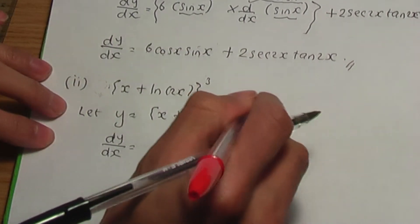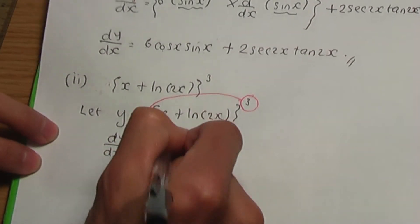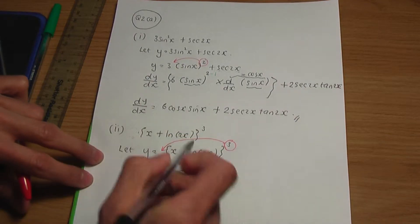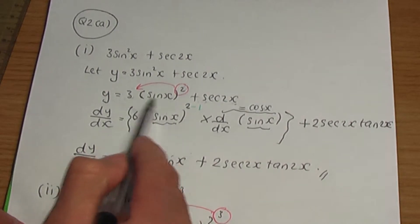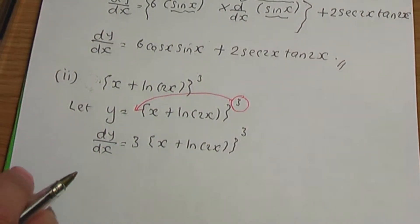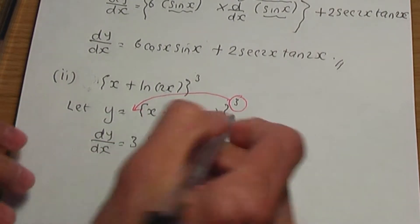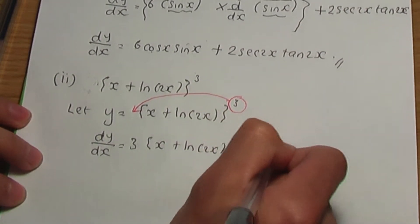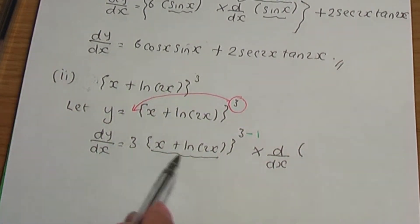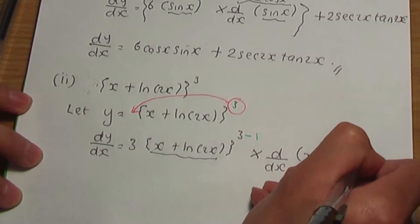We first multiply by the power. The power is 3, so you'll get 3 into x plus ln 2x to the power of... Remember the idea — just as when we differentiated the term in part 1, you need to subtract 1 from the power. So it's 3 minus 1. And then you need to multiply by the derivative of the term in the brackets, which is x plus ln 2x.